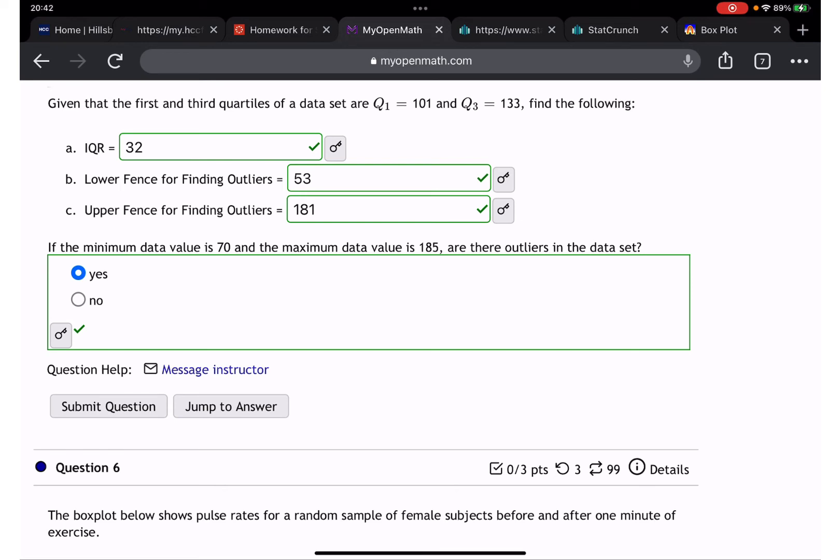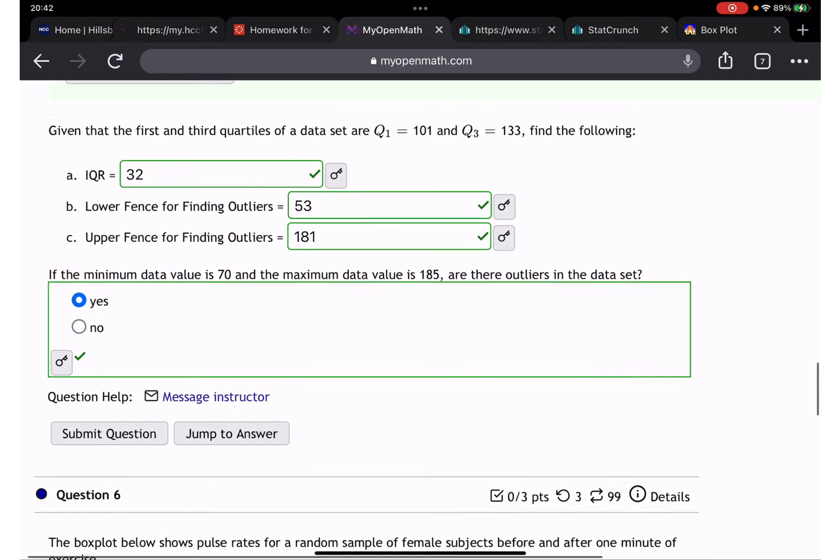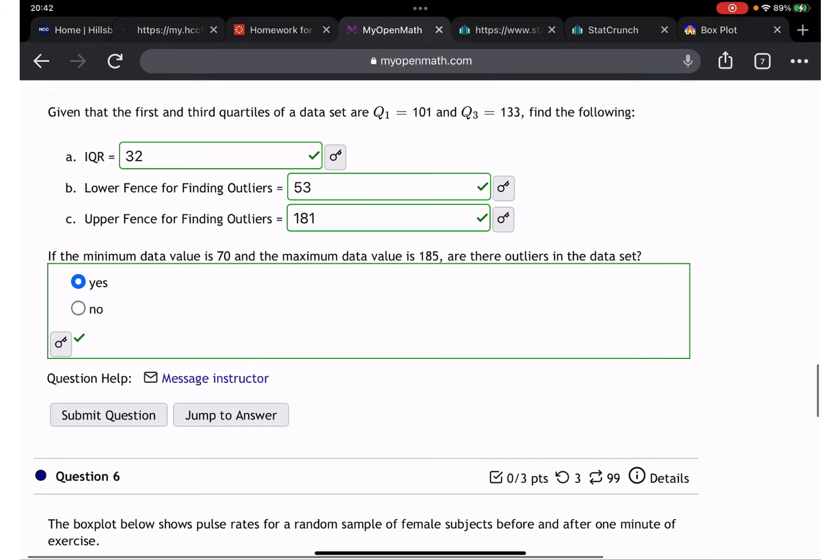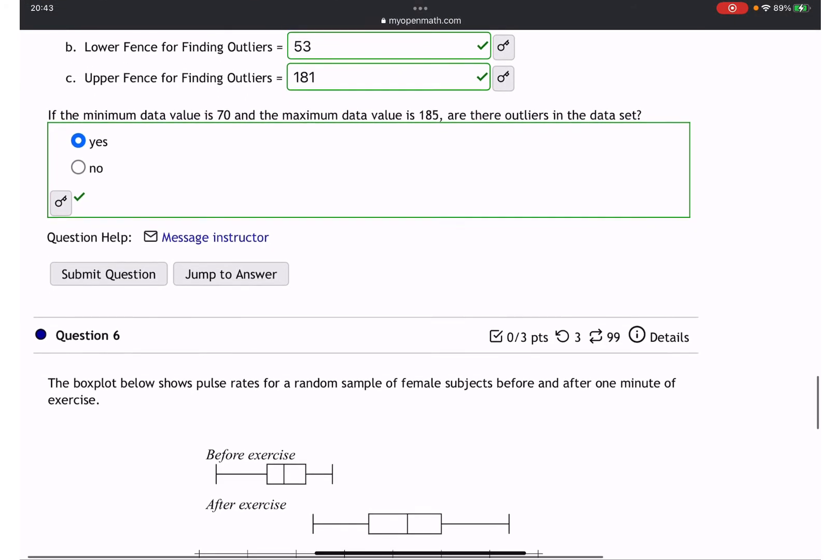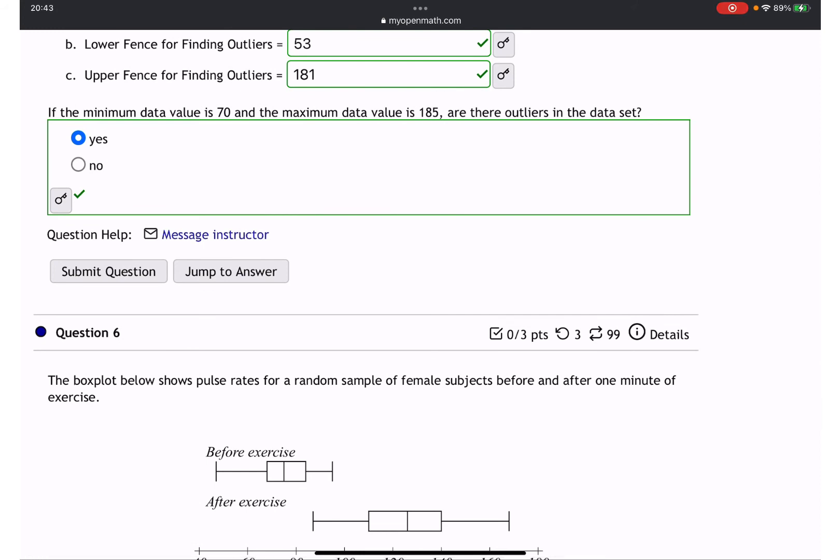And now next question - for some reason answer popped up, but we can answer. If the minimum is 17 and maximum 185, are they outliers in the data set? Yes, it's possible outliers because the range is large. Moving to question number 6.